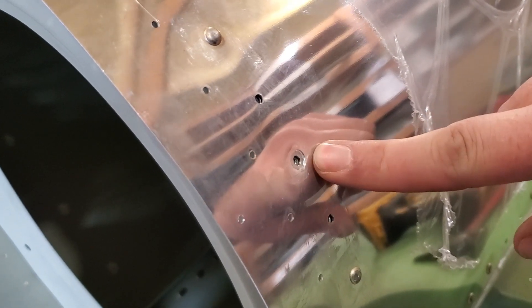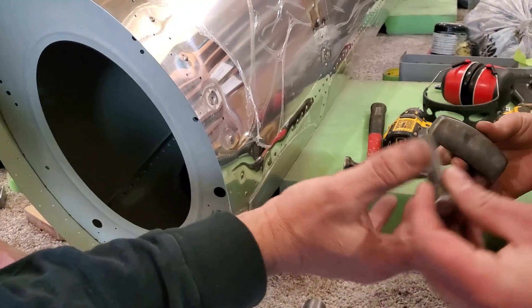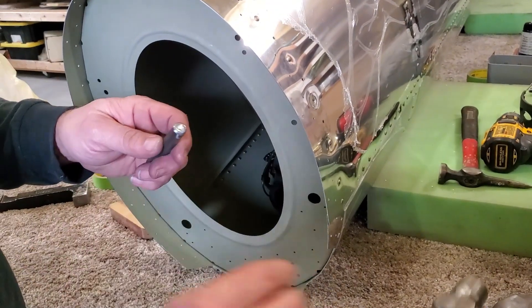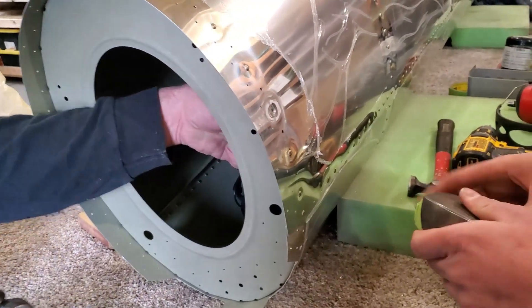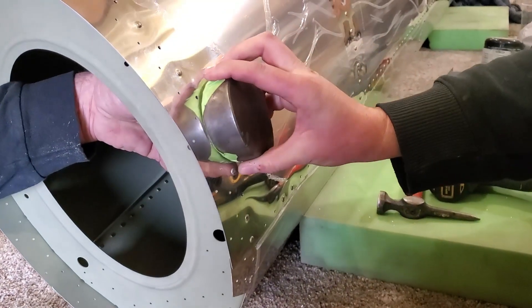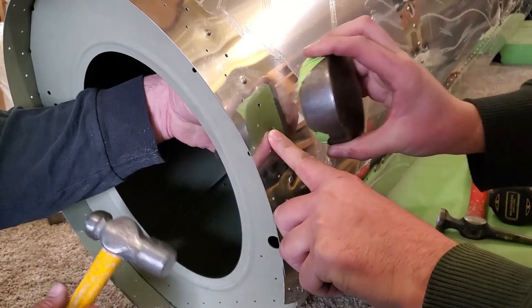We're going to show you how to fix that right now. I'll have the steel dolly—you take the steel punch in the hammer. What we're going to do is make sure that this steel dolly is flat against that.